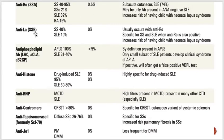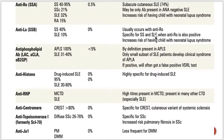Anti-La, also called SSB: this antibody is specific for Sjögren's syndrome and usually occurs together with anti-Ro. So they both occur together and are highly specific for Sjögren's syndrome. When anti-La is present along with anti-Ro, it also increases the risk of neonatal lupus syndrome in the child.